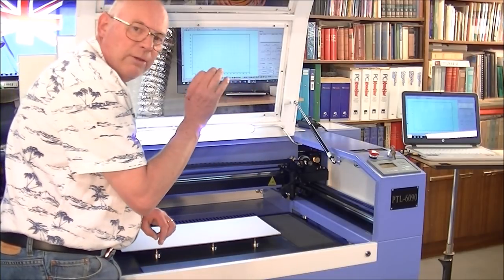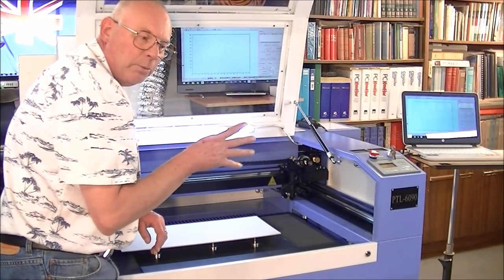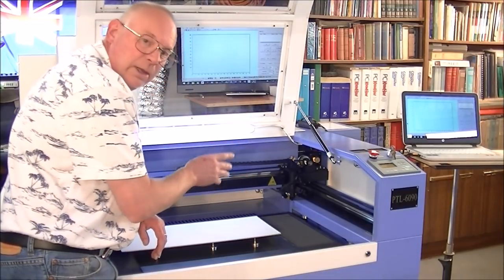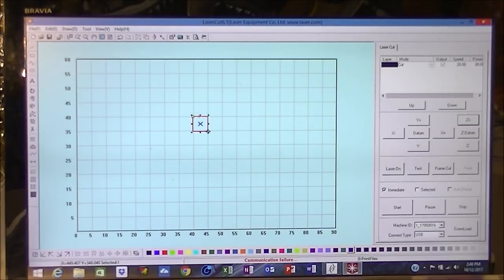What we're going to do now is write the most simplest program. We're just going to cut a square, and we're going to try different powers and different feeds to find the most appropriate feed and power to cut this cleanly. This is LaserCut 6.1, which is free for download on the internet. We're going to go to the square or rectangle box here, left-click and left-click.